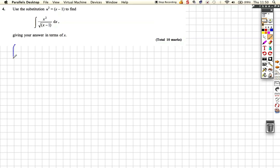We're asked to do the integration x squared over, and I'm going to just rewrite this as a power, so x minus 1 all to the half with respect to x. And they've asked us to use this substitution, they've asked us to use u squared equals x minus 1.